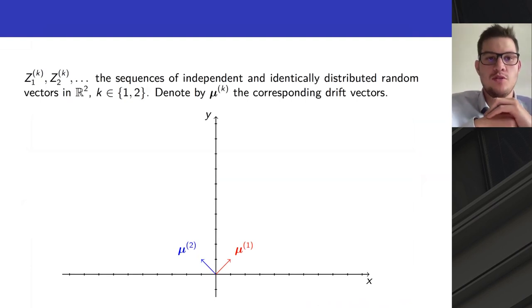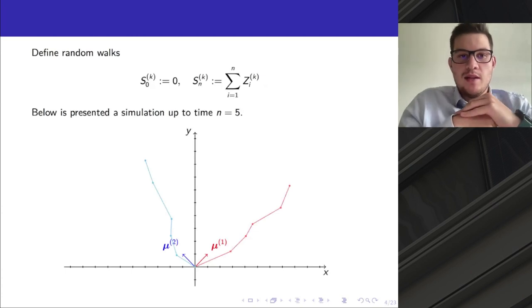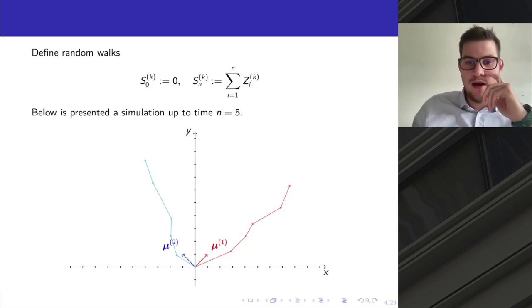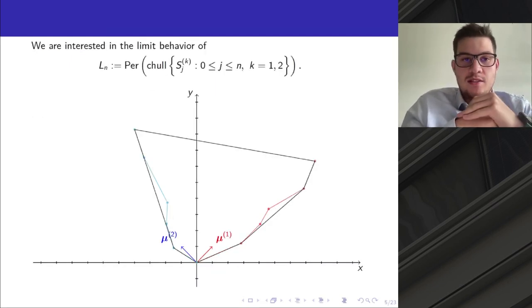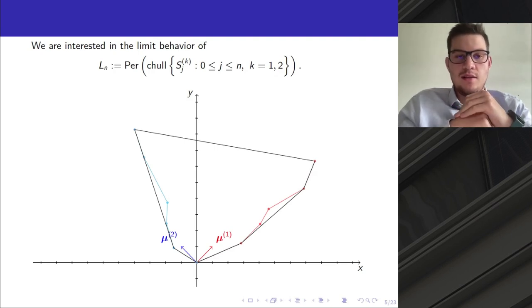We introduce two sequences of independent identically distributed random vectors in R2, and denote by μk the corresponding drift vectors. With these increments we can define random walks that start from zero. Below is presented the simulation up to time n equals 5. Our main interest is the limit behavior of this object, which is the perimeter of the convex hull spanned by these two trajectories up to time n. We can ask ourselves, what is the limit behavior of that random variable?